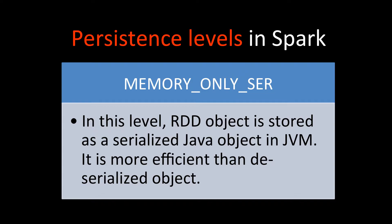Then we have memory only serialized, where the RDD object is stored as a serialized Java object. The other levels use deserialized objects, whereas this one uses a serialized Java object, which is more space-efficient since it stays only in memory.